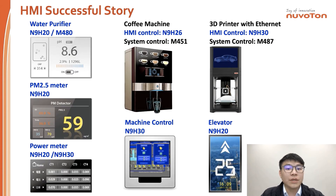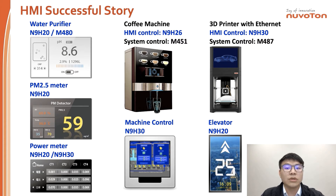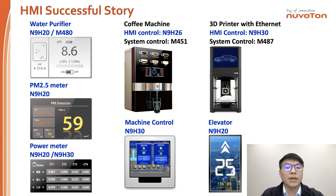Here we want to show some successful stories using the Nuvoton HMI solution. Most cases include two microcontrollers. The first case is a coffee machine: N9H26 is used for HMI control and the N451 is used as the system microcontroller. The second case is a 3D printer with Ethernet function: N9H30 is used for HMI control and the N487 is used as the system microcontroller. The third case is an elevator display, where a single N9H20 microcontroller implements all functions, including HMI display and system communication.